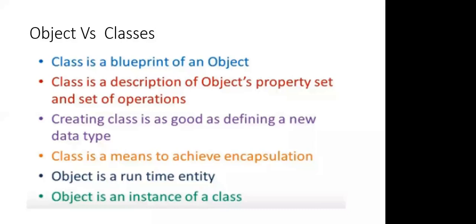For example, variable one stores the name and variable two stores the age of a student. We store both name and age under a single object called student. We store both variable one (name) and variable two (age) under a class — the student class — and use them as an object.